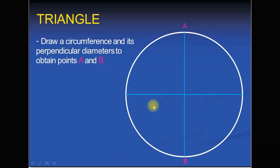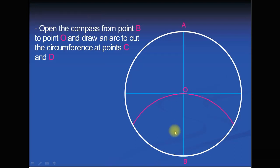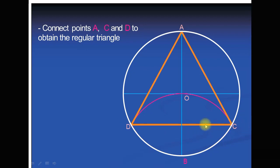For the triangle, just draw this one diameter. You can draw another diameter if you wish, but for the triangle we draw the circumference and one perpendicular diameter to obtain points A and B. In the next step, open the compass from point B to point O — the radius OB — and draw an arc to cut the circumference at points D and C. Then connect point A to point C, point A to point D, and point C to point D. You will get a regular triangle polygon.